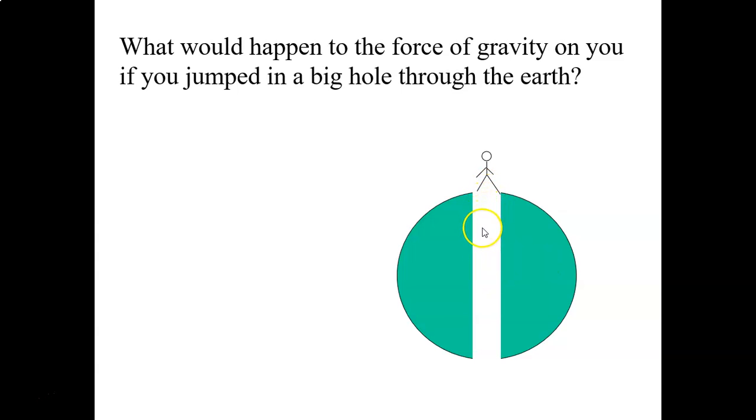So you would accelerate towards the center, accelerate, accelerate. Once you reach the very center, your acceleration would be zero. And then once you crossed over, you would start to accelerate in the opposite direction. You would slow, slow, slow, slow, slow, slow down. And if you didn't lose any energy, you would hop out on the other side.